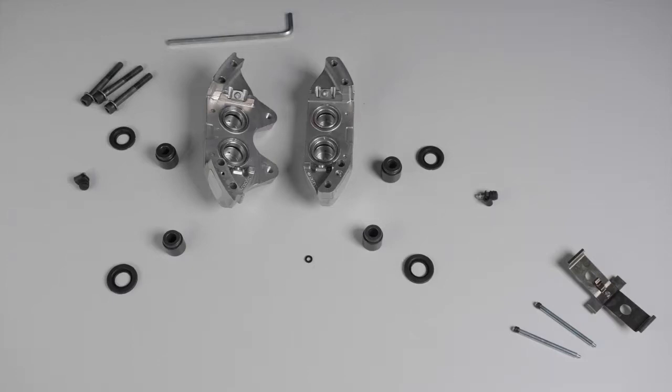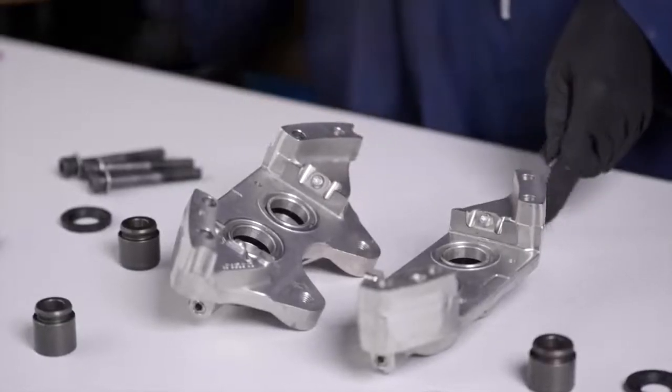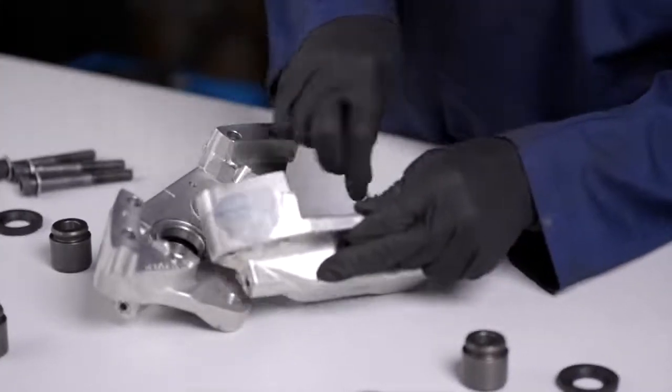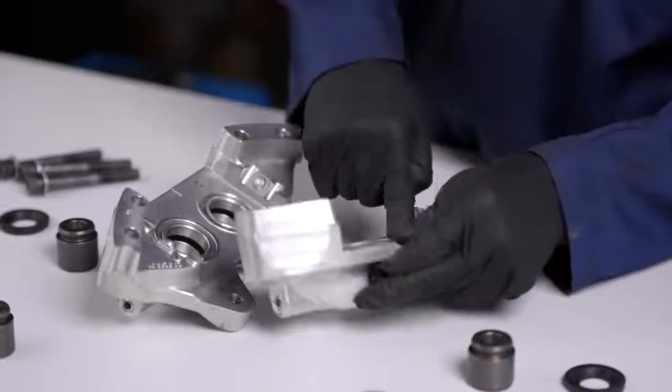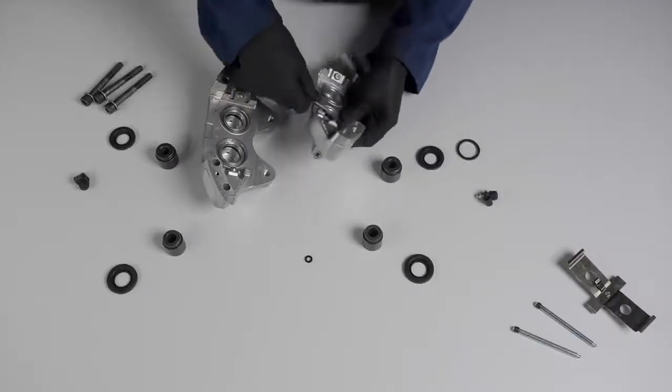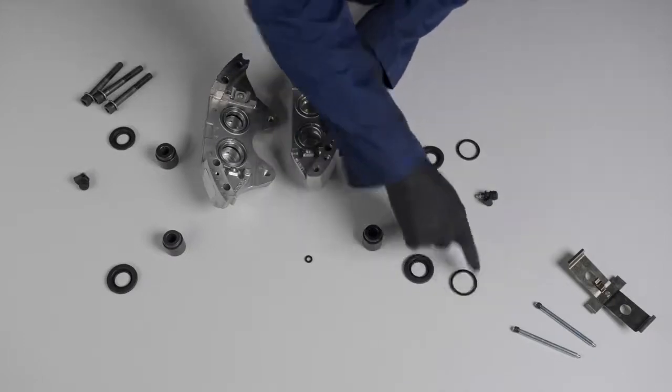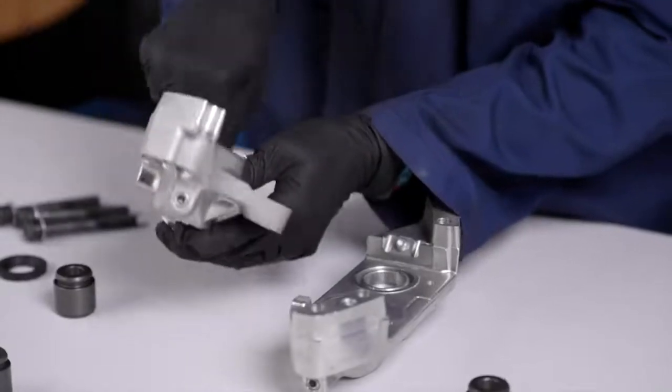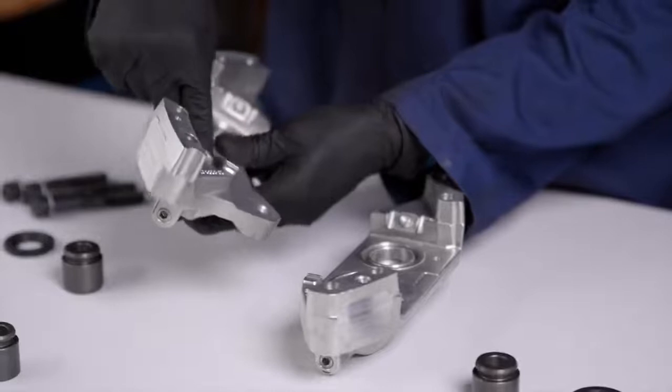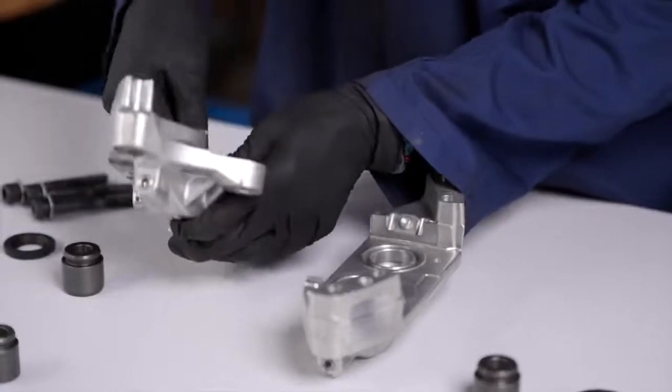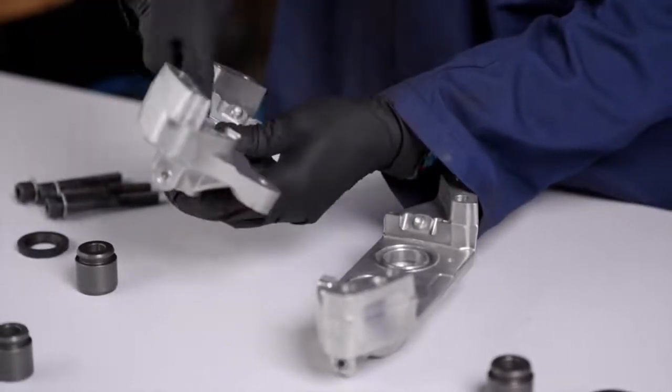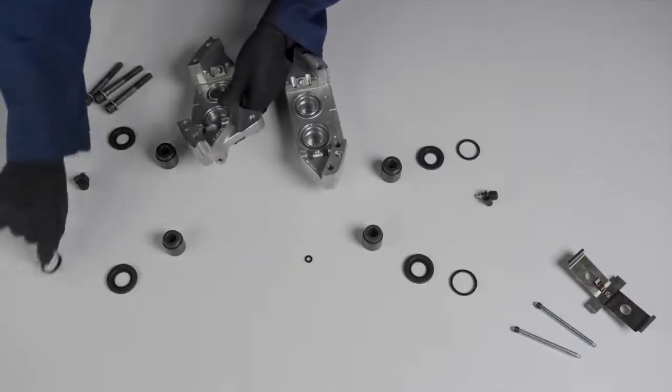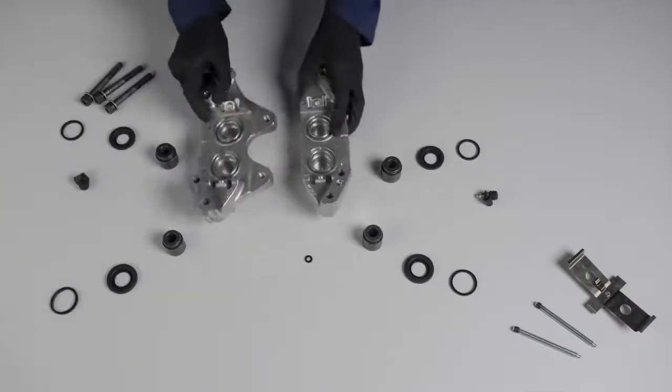Last but not least, we will have the four caliper joints left, which prevents leaks and helps to push back the piston. These are all components that encompass this fixed caliper.